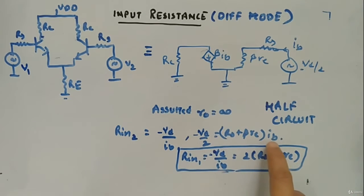Rs plus beta Re into Ib, and we are interested in Rin2. Rin2 will be minus Vd by Ib, that is 2 Rs plus beta Re. So either you